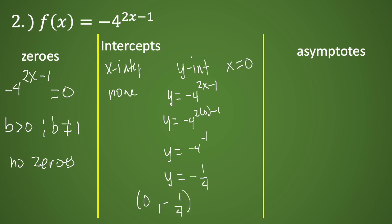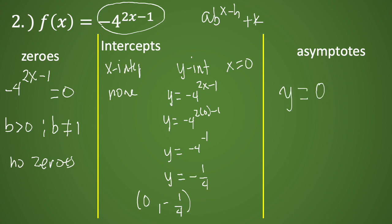For the asymptotes, using the formula a times b raised to x minus h plus k, since we don't have k for this expression, the rule states y equals zero. So the horizontal asymptote is simply the x-axis, y equals zero.